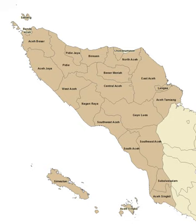The new provinces are Pulau Sumbawa, South Papua, Central Papua, Southwest Papua, Tapanuli, Nias, Kapuas Raya, and Bolang Mongondow Raya.